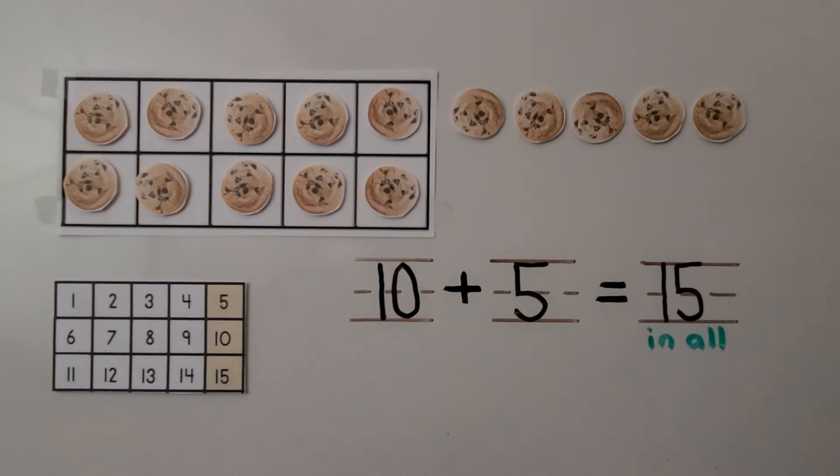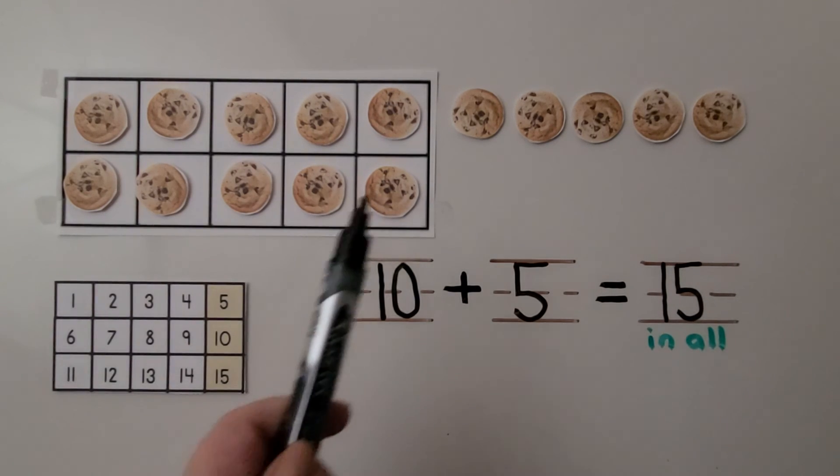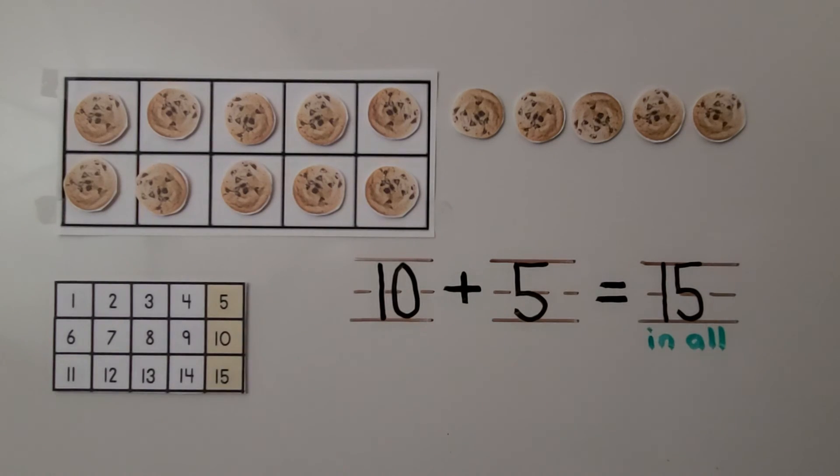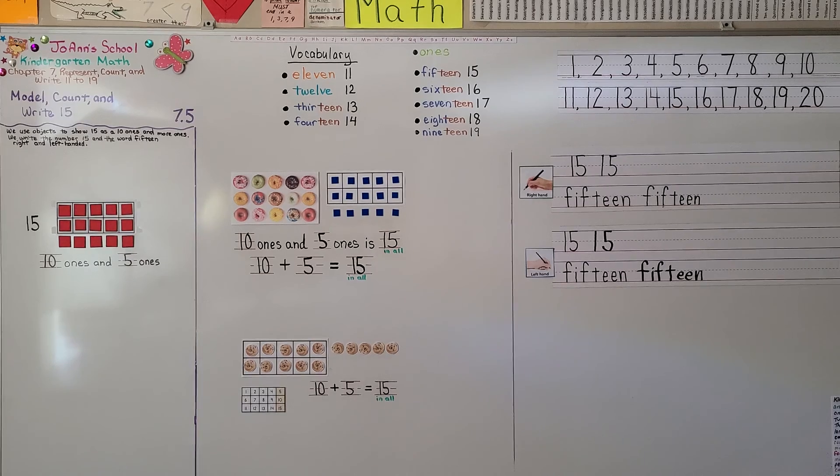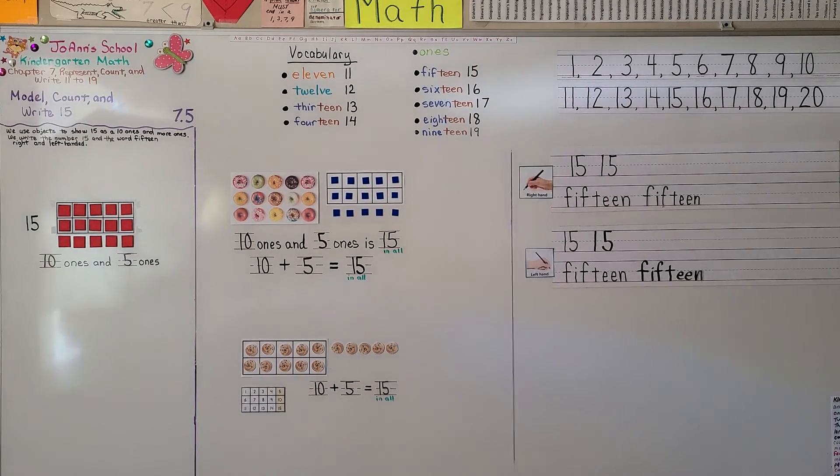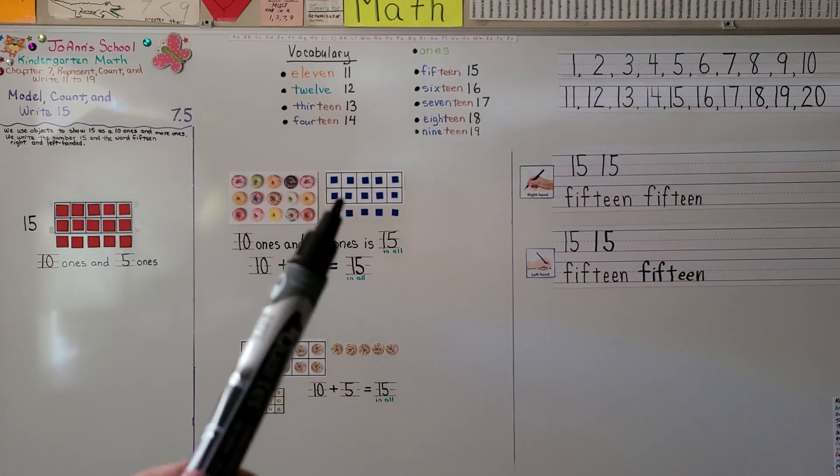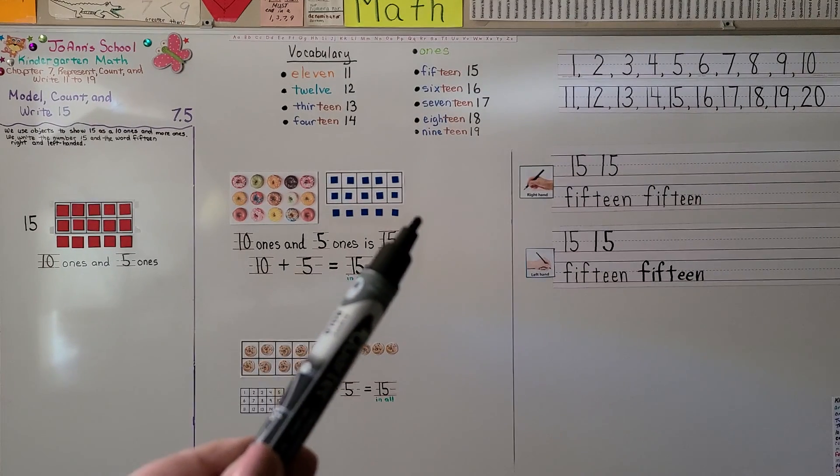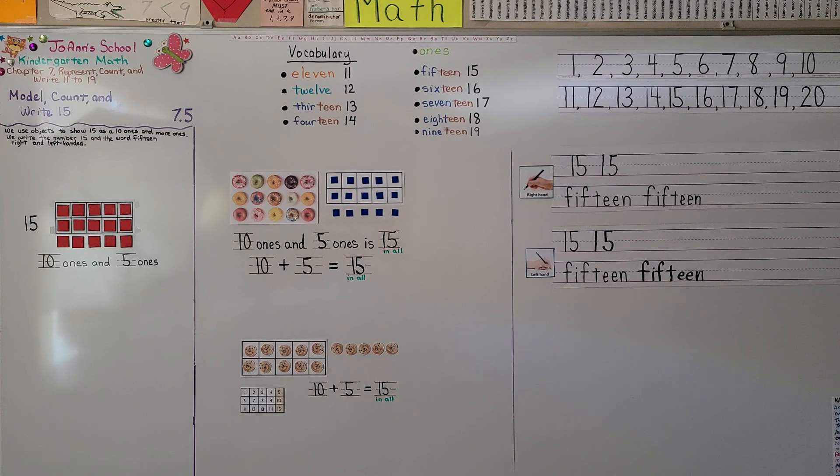15 is 10 ones and 5 ones. It's 10 and 5 more. So remember, when you see a full 10 frame and then a full row of 5 underneath it, we know we have 15.